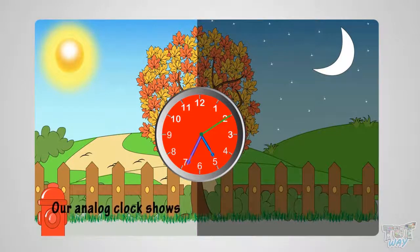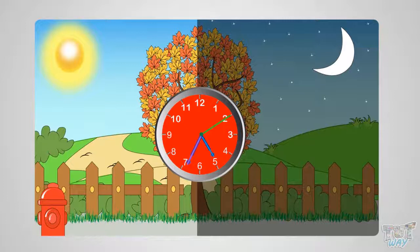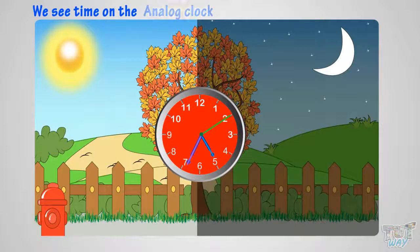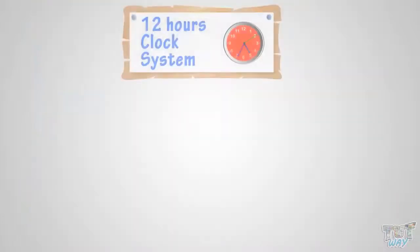Our analog clock shows 12 hours numbered from 1 to 12. Then how do we use an analog clock to see the time of a 24-hour day? Have you ever wondered? We see time on an analog clock using the 12-hour clock system.